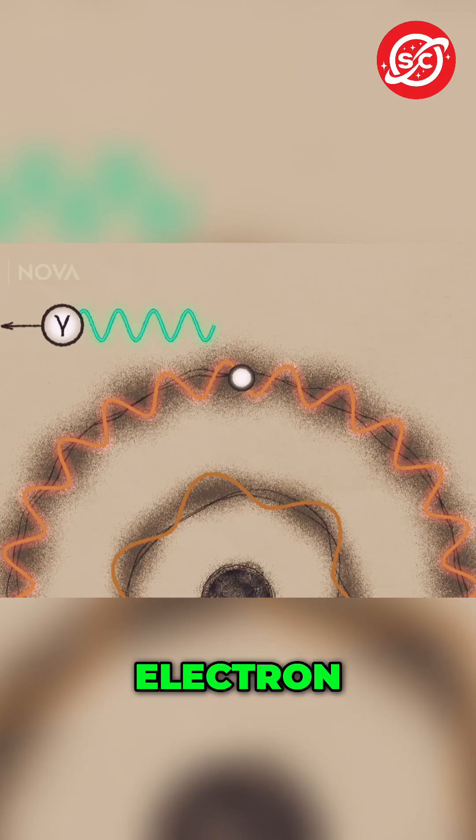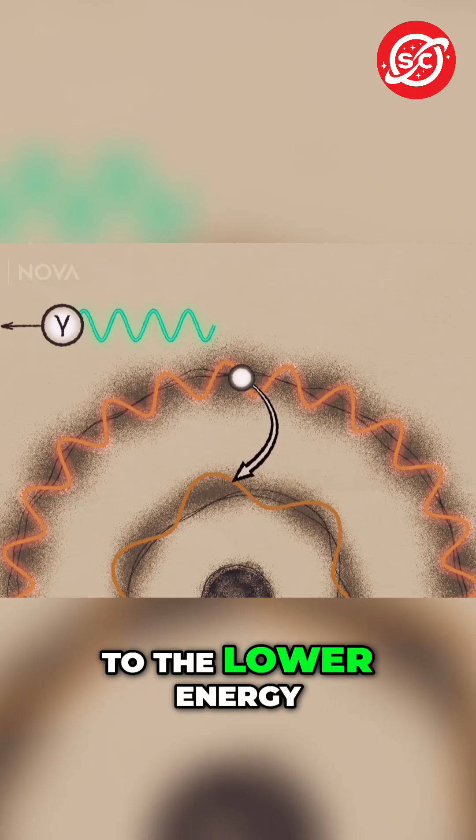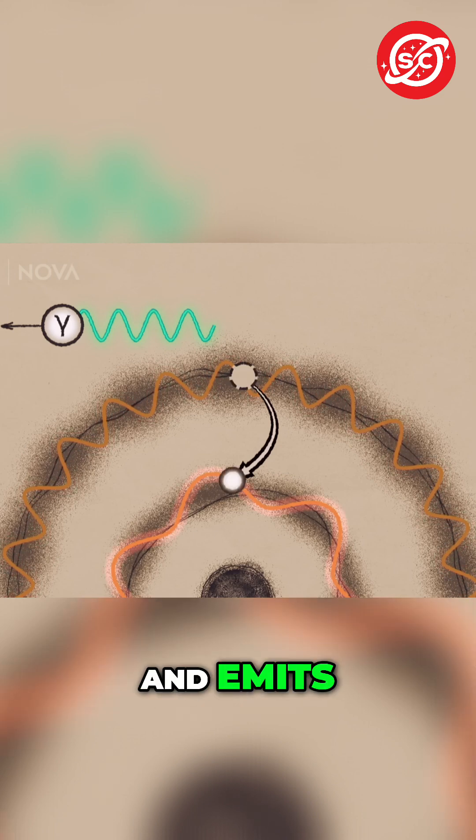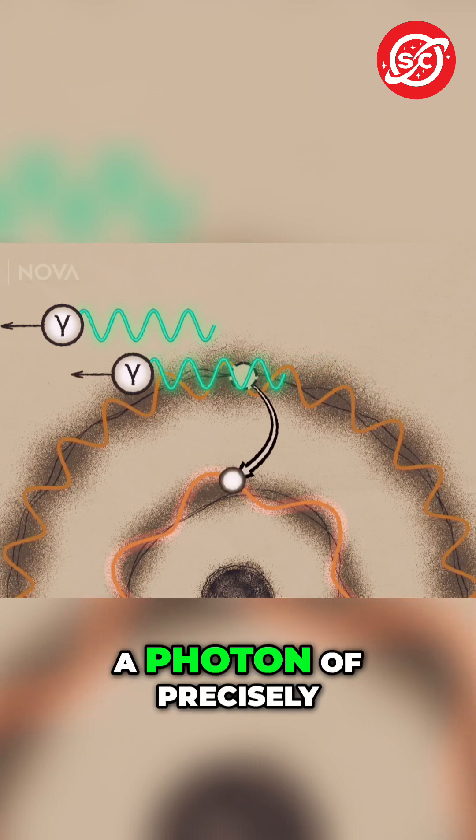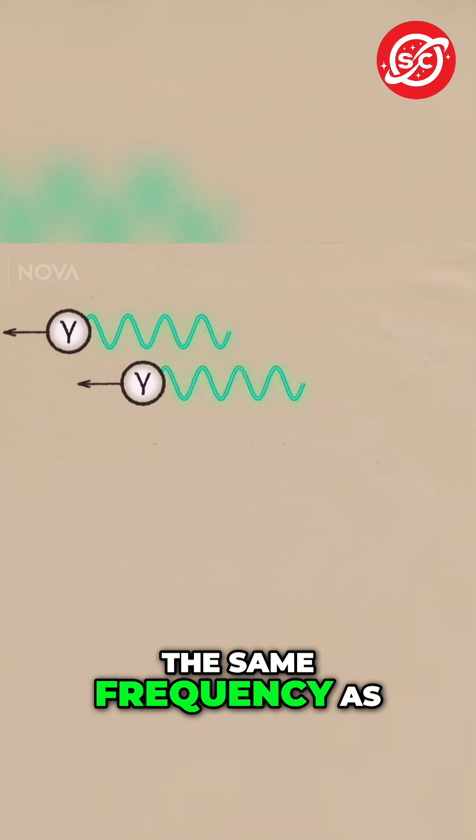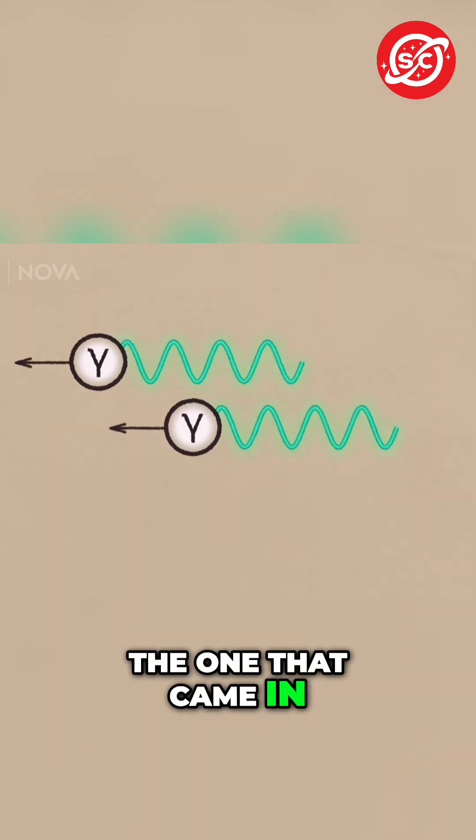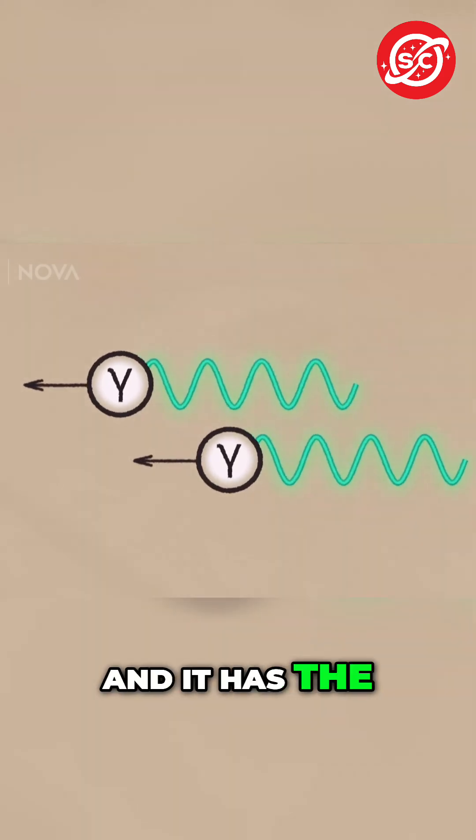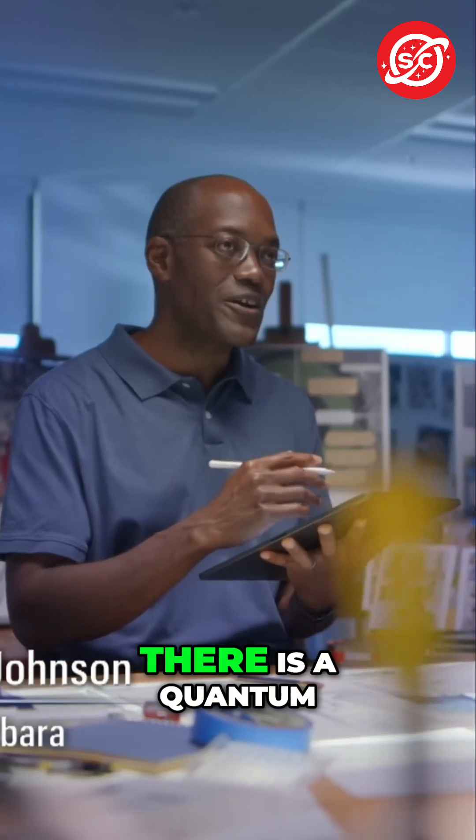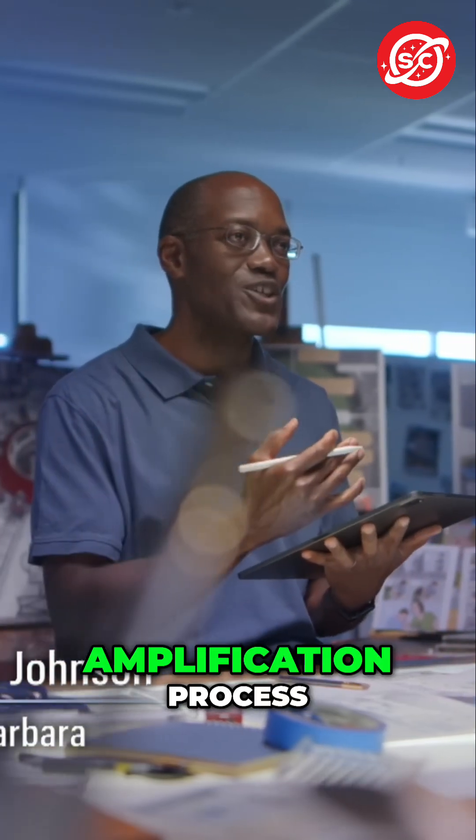The electron loses energy and goes to a lower energy and emits a photon of precisely the same frequency as the one that came in. It's going in the same direction and it has the same phase. So what we have there is a quantum mechanical amplification process.